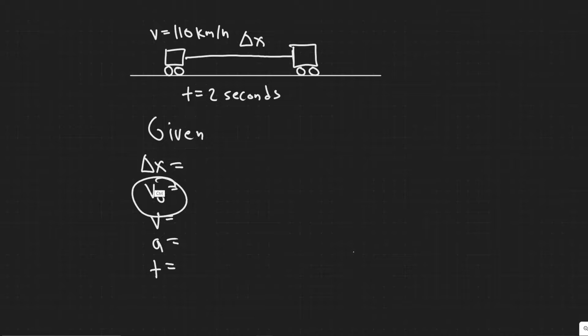And then v sub zero is your initial velocity in an interval. So in this case, we're doing the interval of this change in position. So your initial velocity would be how fast you're traveling in the beginning. So your initial velocity would be your speed right here.